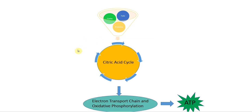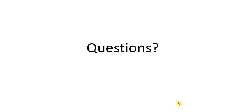And so now we've gone through all of the connections of the citric acid cycle — how things can enter the cycle, the cycle itself, and where the products of the cycle go in order to make ATP. If you have questions, please contact a course mentor. Thank you.